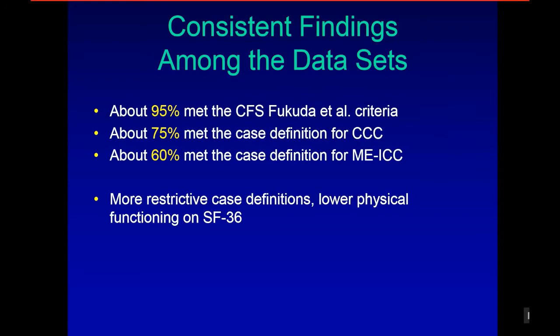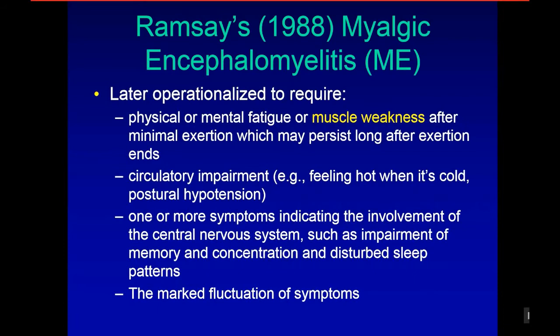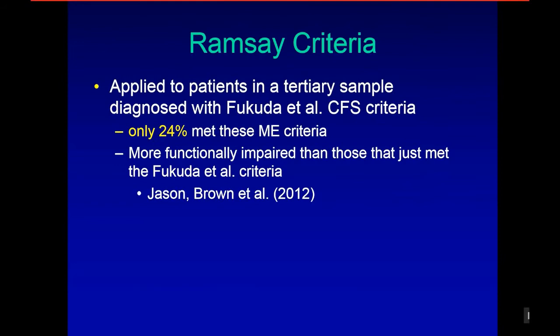There's also Ramsey's ME criteria, later operationalized to describe physical or mental fatigue or muscle weakness after minimal exertion, circulatory impairment, one or more symptoms involving the central nervous system, and marked fluctuation of symptoms. When we tried to operationalize the Ramsey criteria, we found only 24% met the ME criteria from those diagnosed with Fukuda, and that 24% were more functionally impaired than those who just met the Fukuda criteria.